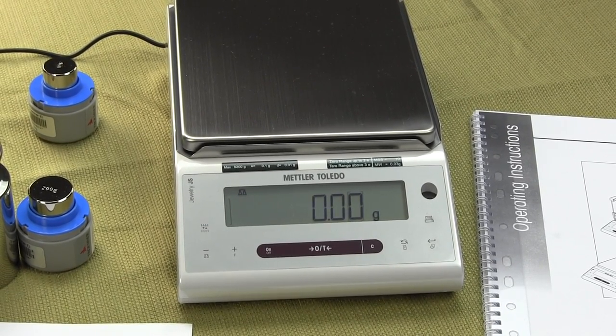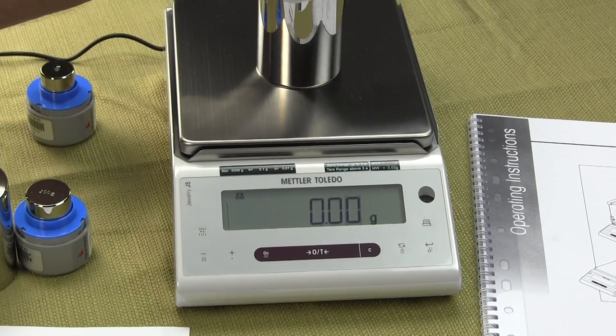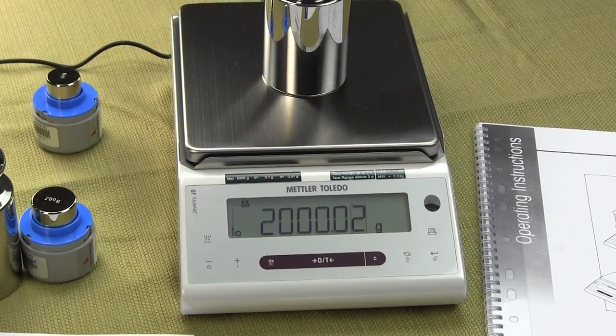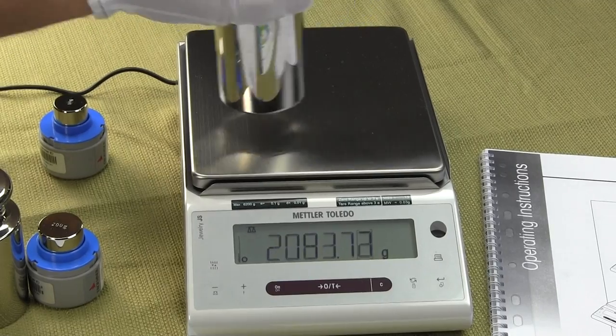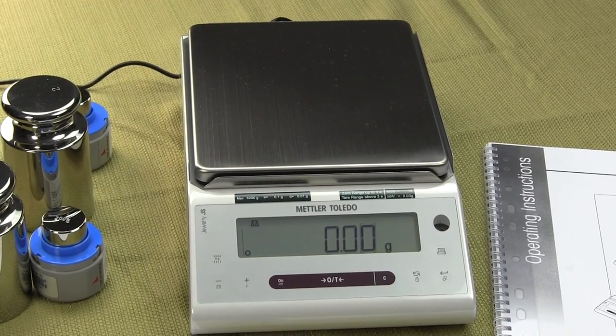The Slash A means it's legal for trade and this balance is 6200 grams by a hundredth of a gram. To do a calibration with this balance,